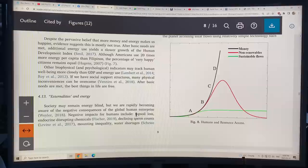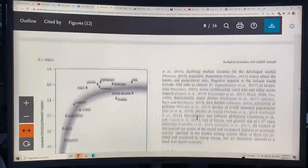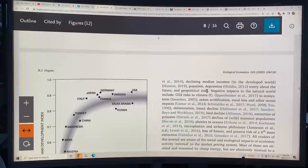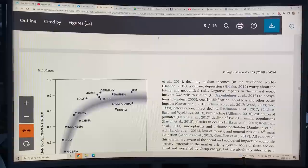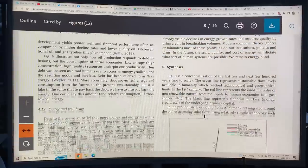So basically, the externalities are really starting to kill us. We're seeing negative impacts: topsoil loss, endocrine disrupting chemicals, declining sperm counts, mounting inequality, water shortages, declining medium incomes, populism, depression, worry about the future, geopolitical risk, negative impacts to the natural world from CO2, ecosystem decline, biodiversity decline, ocean acidification, coral loss, deforestation, all these different things.